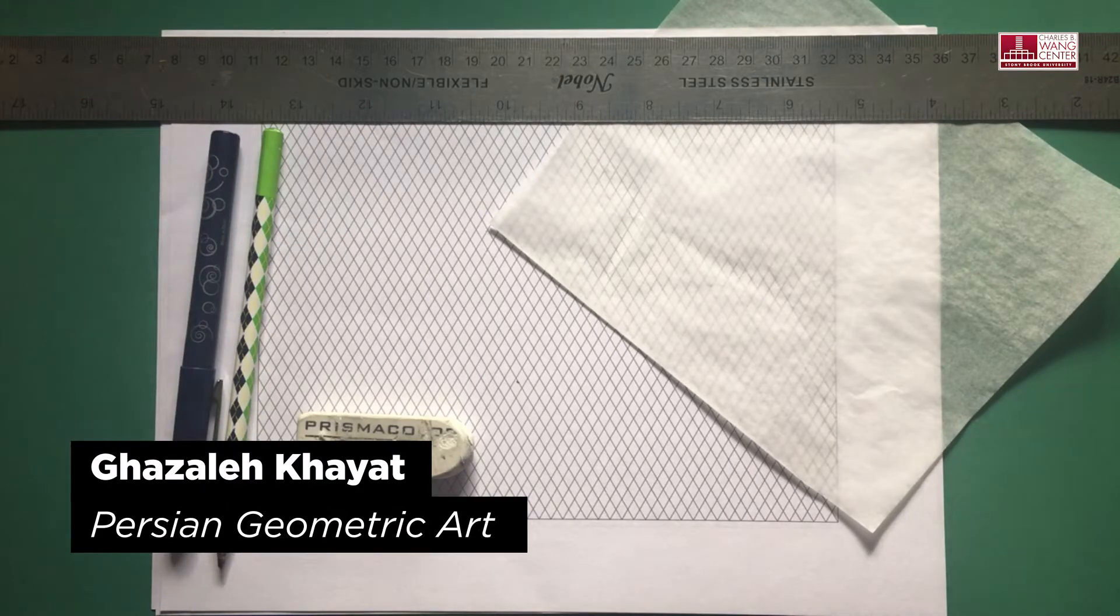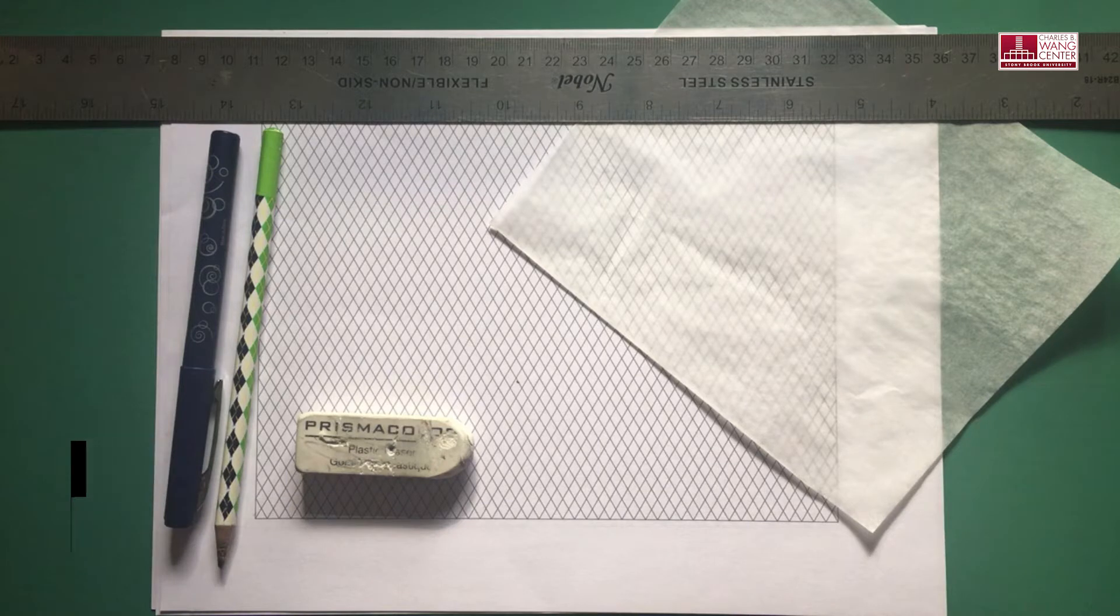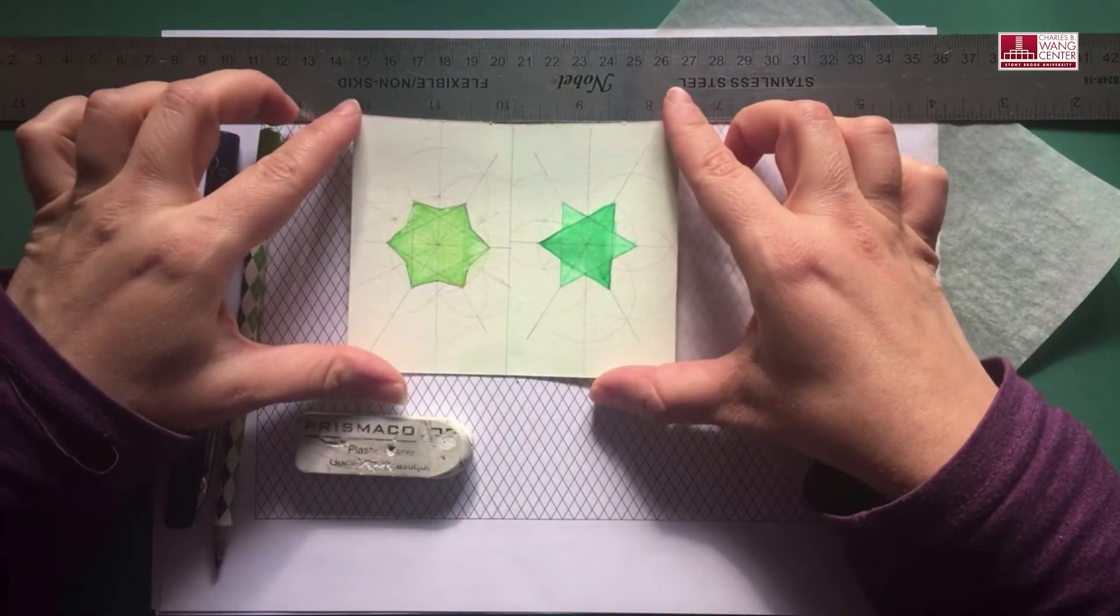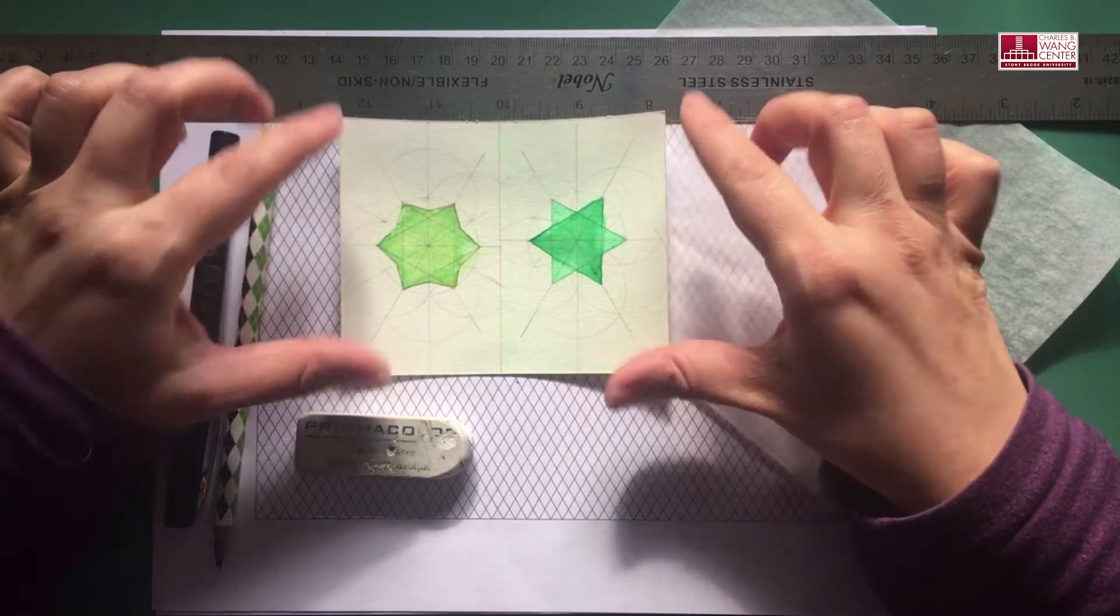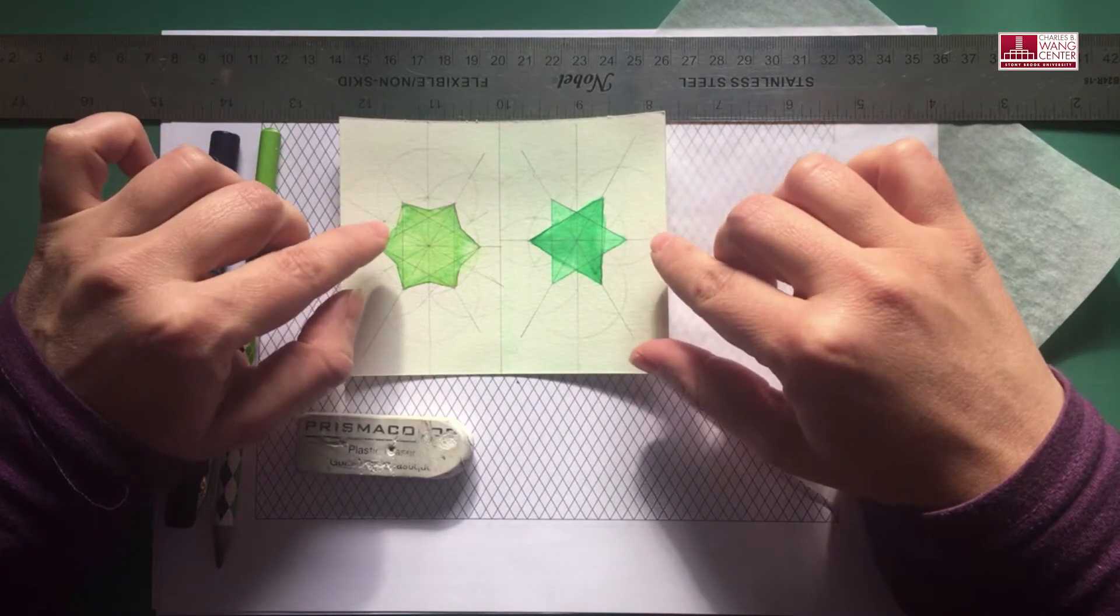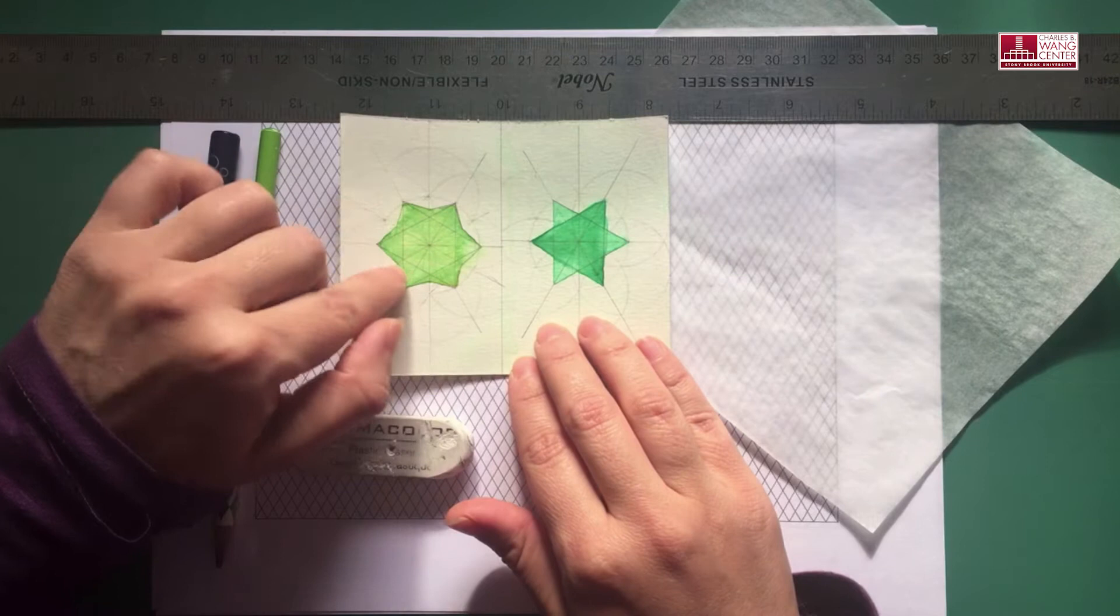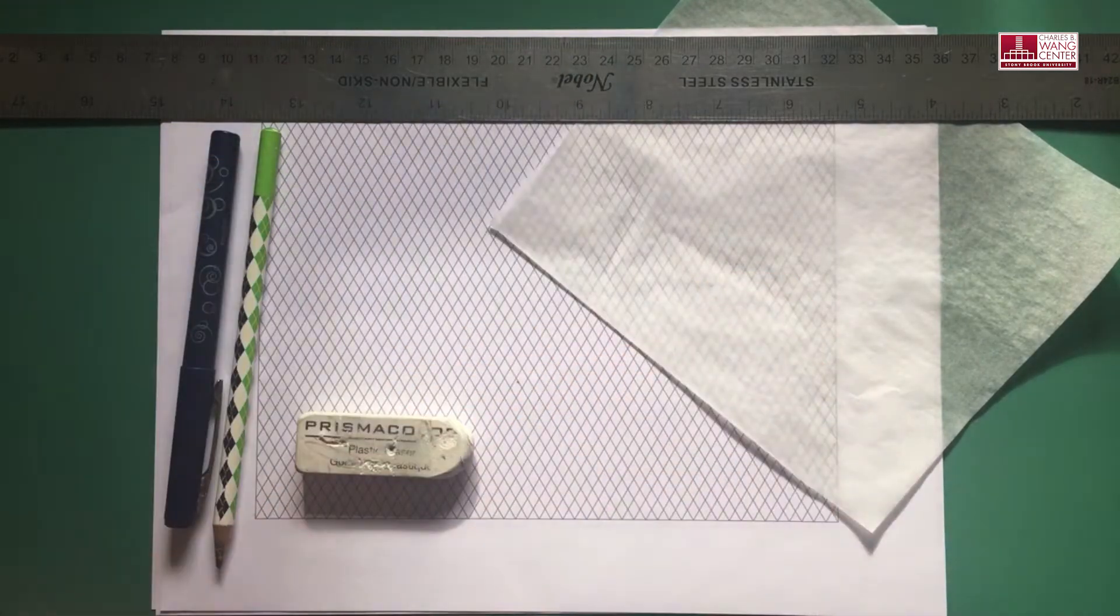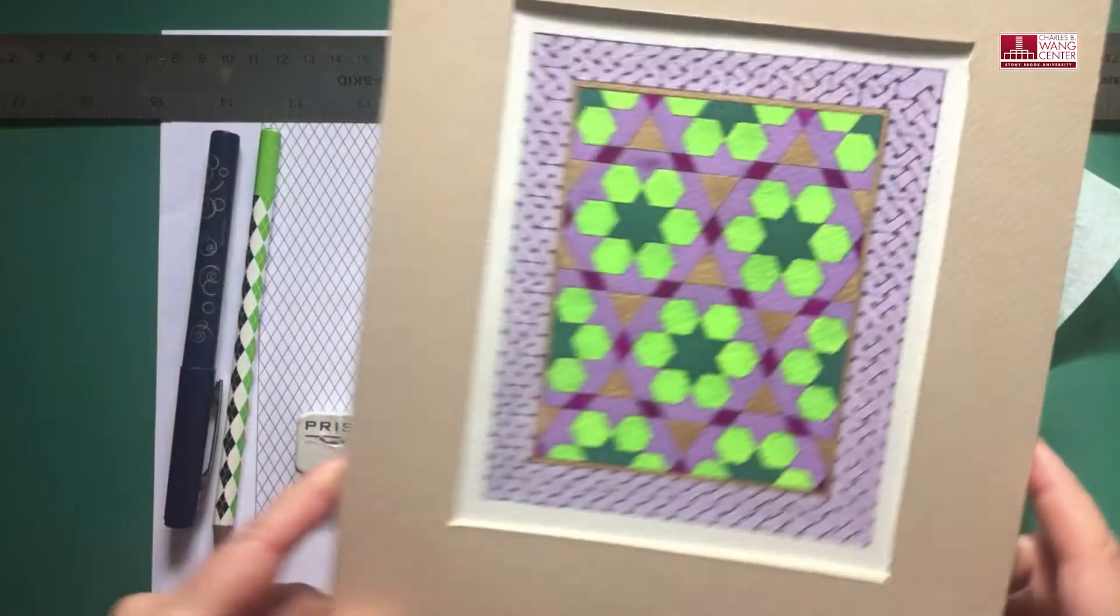Hi everyone, today we are going to learn how to draw a six-fold geometry pattern. By six-fold geometry pattern, we mean those geometry patterns in which you can identify either of these two six-point stars. So the pattern I have chosen for you is this one.